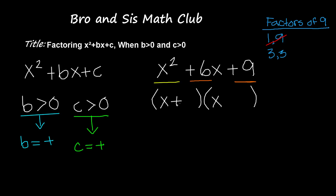So we have positive 3 and positive 3. They're both going to be positive because b is greater than 0 and c is also greater than 0.